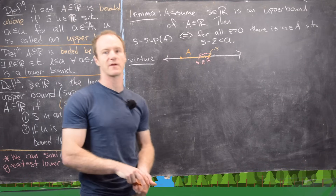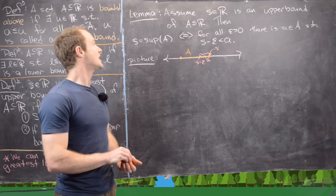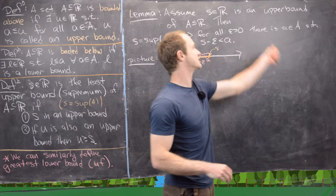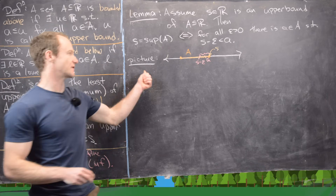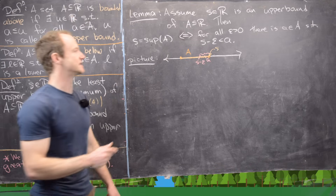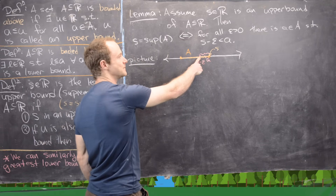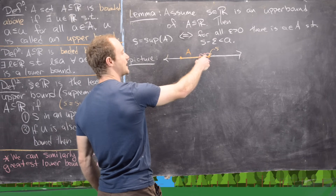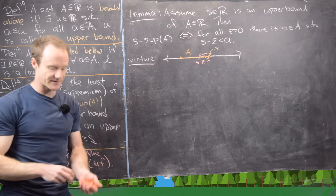Now for an important classification theorem for the least upper bound: assume S in R is an upper bound for a set A. Then S is the supremum of A if and only if for all epsilon greater than 0, there exists an a in A such that S minus epsilon is less than a. Pictorially, A is in orange and S is the supremum. If we go to S minus epsilon, we can always find an element from A that is bigger than S minus epsilon, regardless of how small epsilon is.